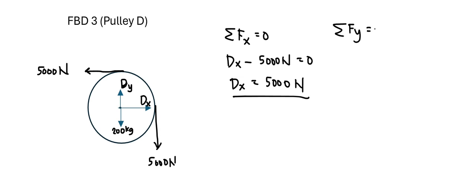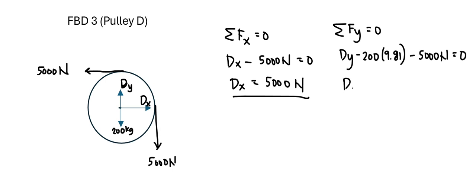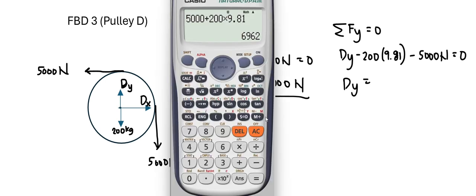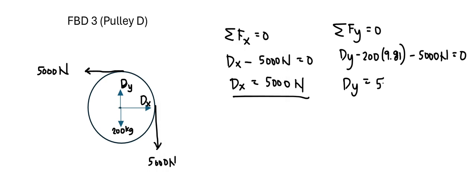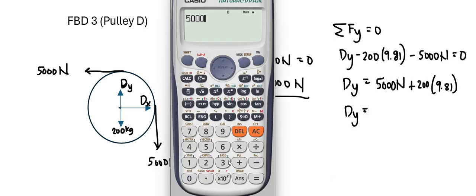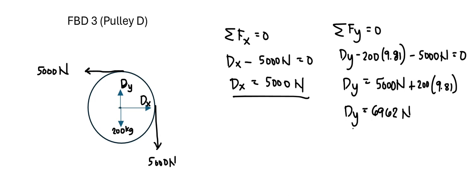Taking summation force vertical, we can solve for DY. That is DY minus 200 kg times 9.81 minus 5,000 newtons equals 0. Since the mass is given in kilograms, we multiply by the gravitational acceleration of 9.81. Solving for DY, we get 5,000 plus 200 times 9.81, which gives DY equal to 6,962 newtons. Since the result is positive, our assumed direction is correct.